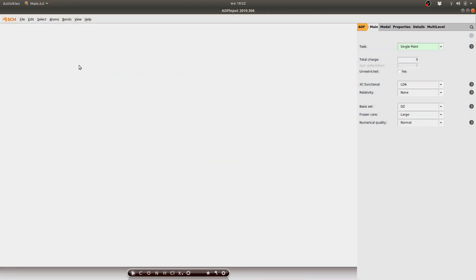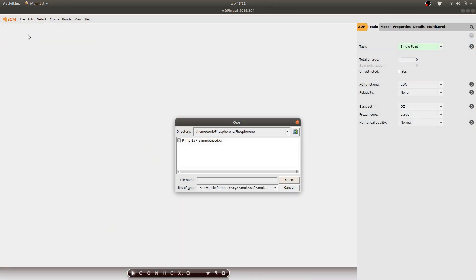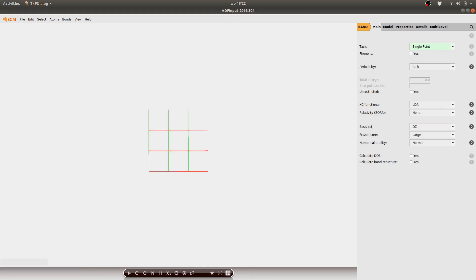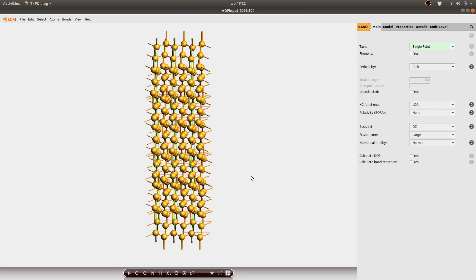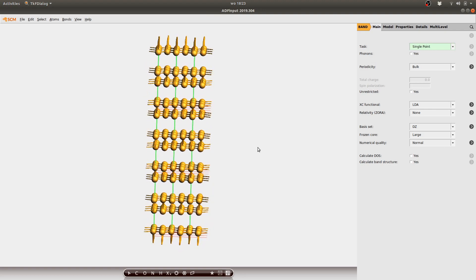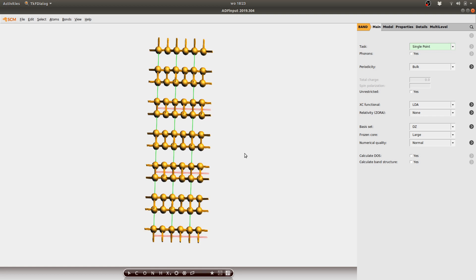We can then proceed by importing this structure into the graphical user interface of the Amsterdam modeling suite. This is the result. This is the black phosphorus crystal and you can easily make out the individual layers of this material. In order to convert that into a model for a phosphorene monolayer, I select the atoms of one of these layers and I delete them.